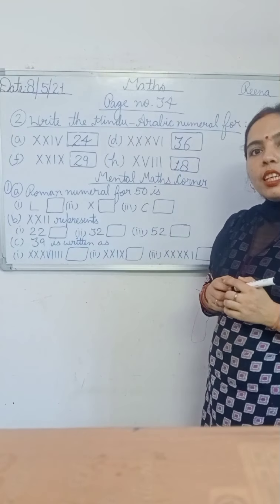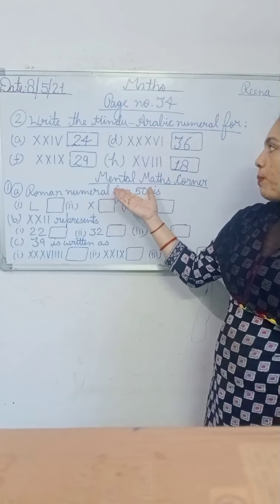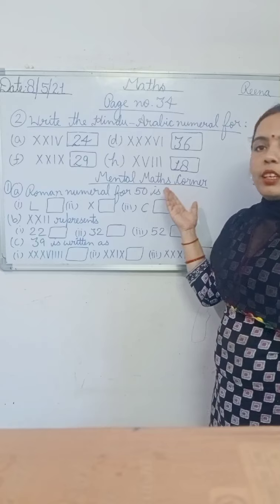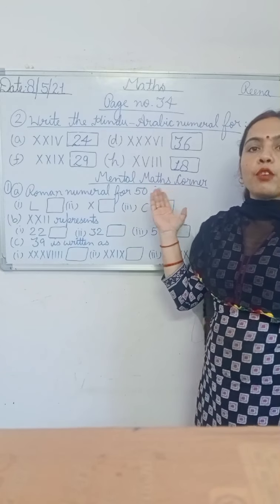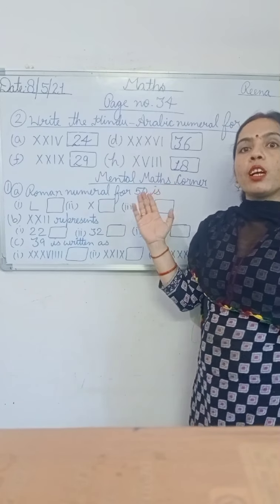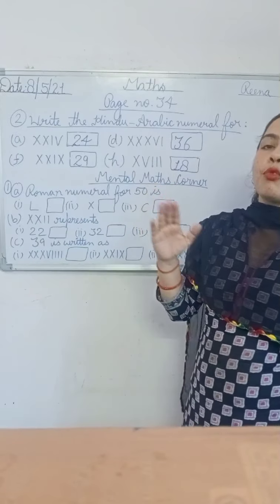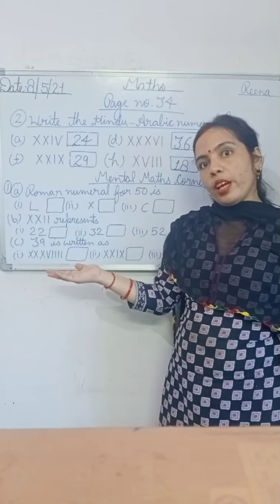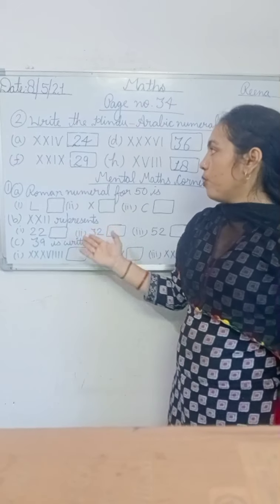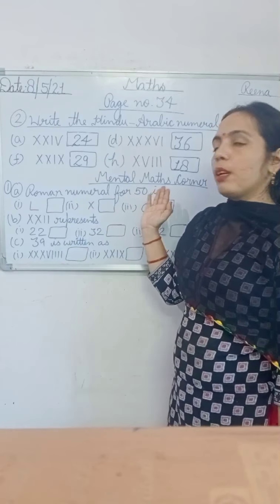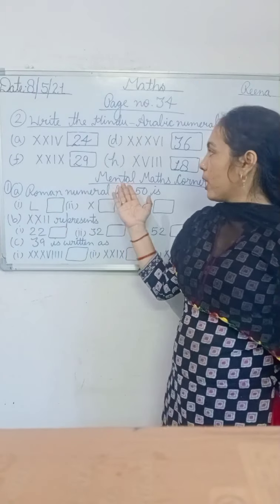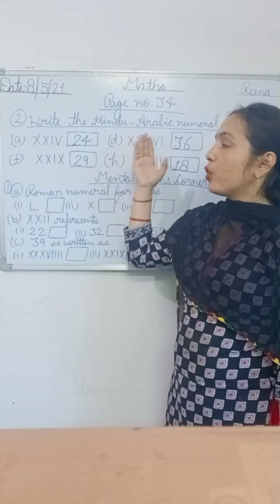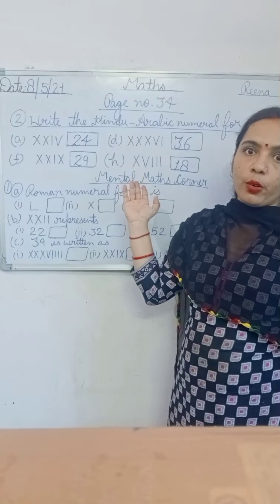Is it clear? Now the next topic is the Mental Maths Corner. For the Mental Maths Corner, firstly learn Roman numbers from 1 to 100, then solve your Mental Maths Corner. Your Mental Maths Corner is based on activity number 1.